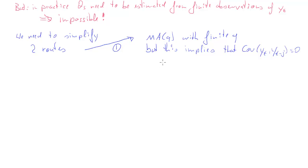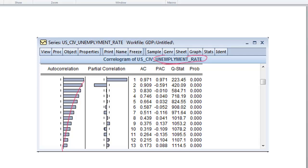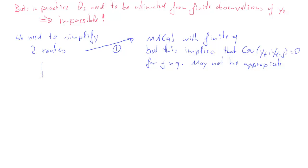We have learned in the MA properties clip that this implies that the covariance of Yt and Yt minus J is equal to 0 for all Js larger than Q. And that may not be appropriate. An example for that is when we looked at the unemployment rate, we had very slowly decaying autocorrelation and therefore we don't really want to cut off the covariance function.